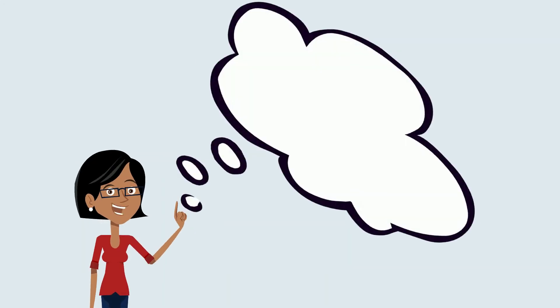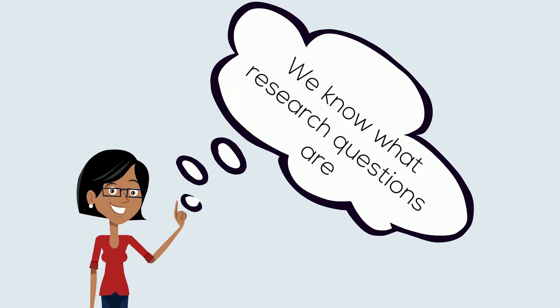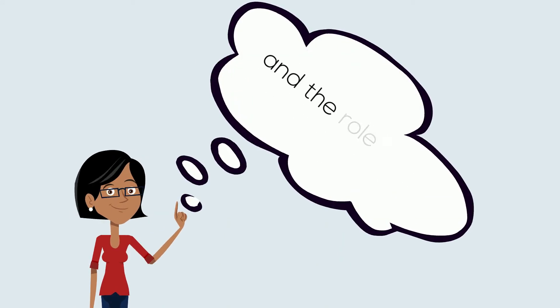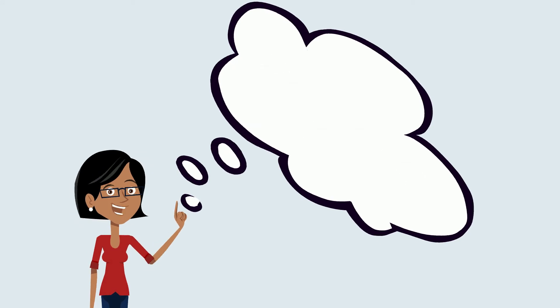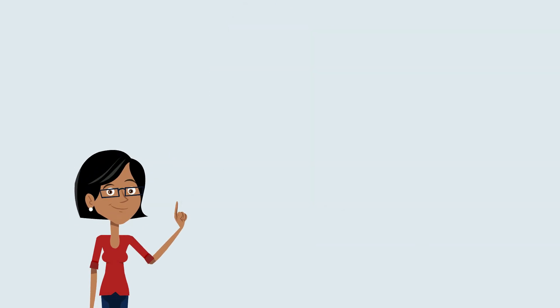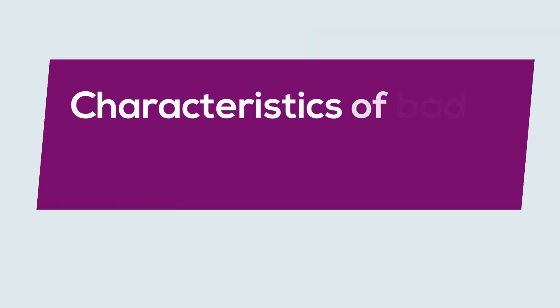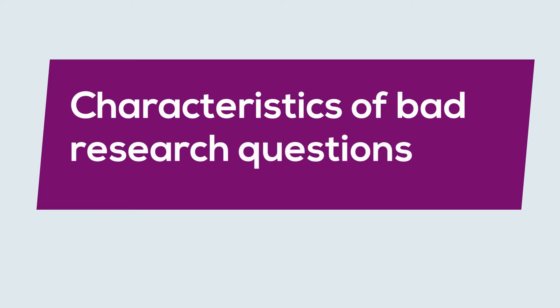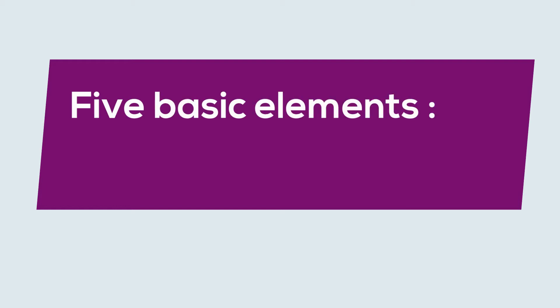Now we basically know what research questions are and the role they play in the research process. How do you write good ones? A useful place to start is perhaps with the characteristics of bad research questions and work backwards from these. Bad research questions can be categorized in five basic elements.